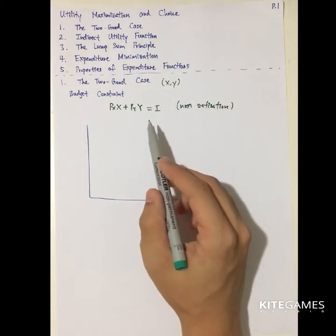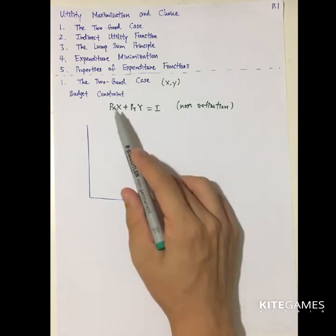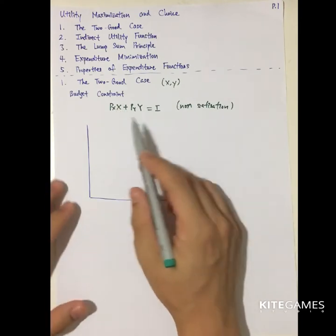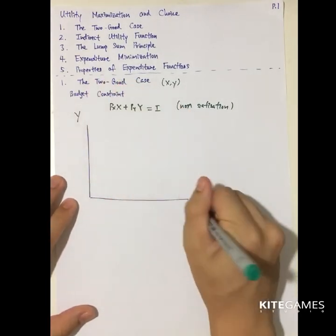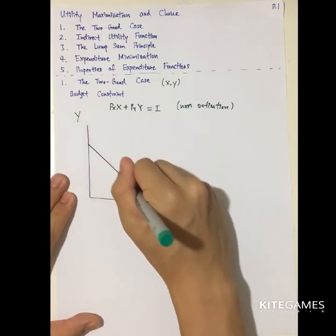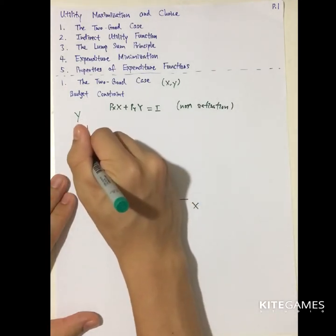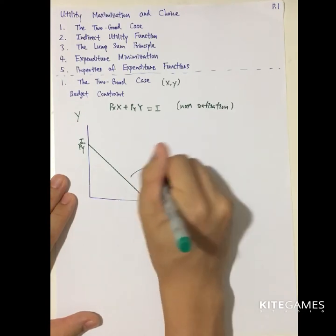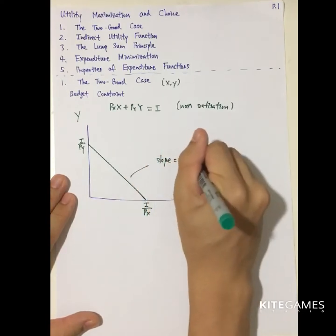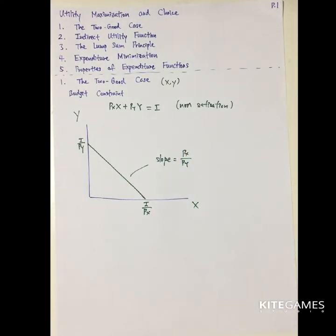So how to find the optimal X and Y — that means how many X and Y should be consumed — depends on the budget constraint and the utility functions. The budget constraint has the form PX·X plus PY·Y equal to I. If you draw it in a diagram, it is a straight line. The Y-intercept is I divided by PY, and the X-intercept is I divided by PX. The slope is equal to PX divided by PY.